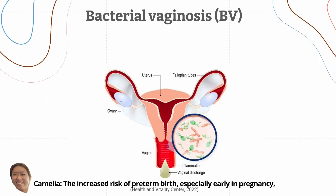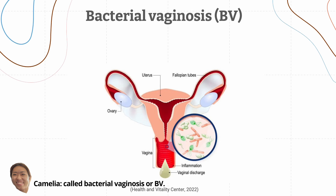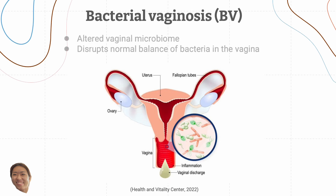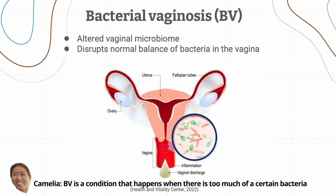The increased risk of preterm birth, especially early in pregnancy, has been associated with a state of altered vaginal microbiome called bacterial vaginosis or BV. BV is a condition that happens when there is too much of a certain bacteria which disrupts the normal balance of bacteria in the vagina.